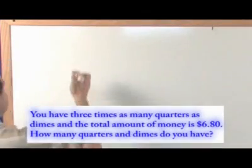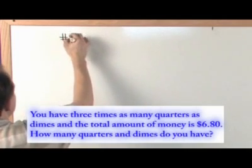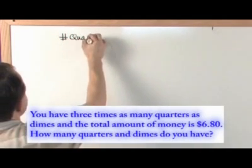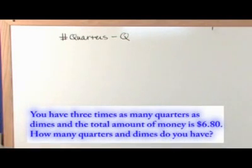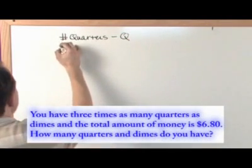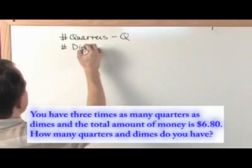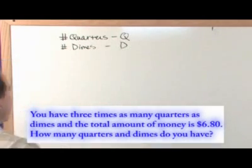So here it's really useful in all of these problems when you have quarters. Just use a big Q to designate how many quarters you have, and dimes will be the same way. D is the number of dimes you have.